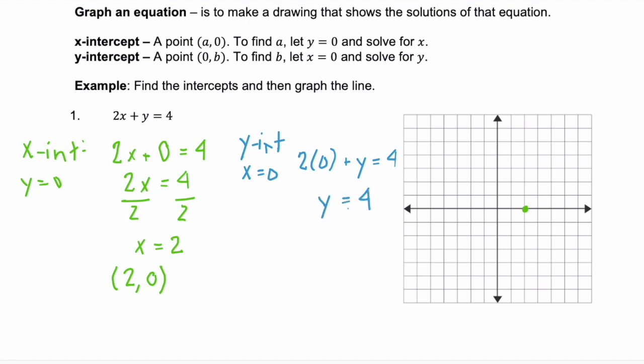And again, this is y equals four when x is zero. So it's a point. It's the point (0, 4). And we're going to plot that.